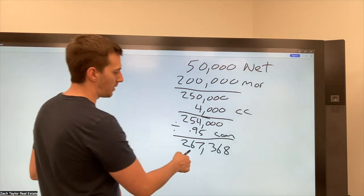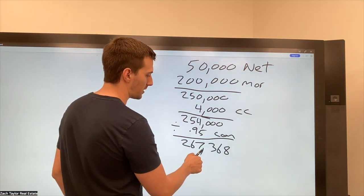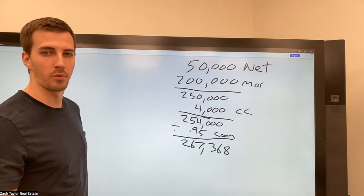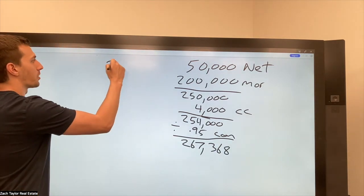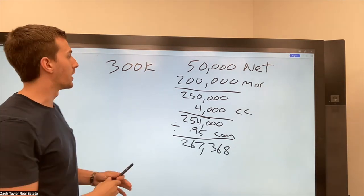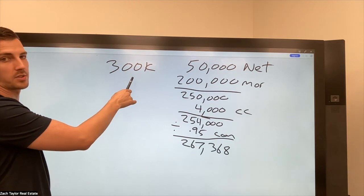So let's say we have to get at least 267,368 purchase and sale agreement. Let's say we ran comps on the home for the for sale by owner and it's worth $300,000. Well, this makes sense to work together.